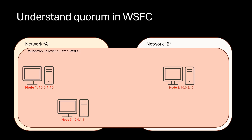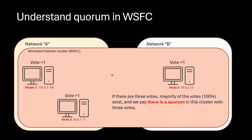Suppose you configured a failover cluster with three nodes. Two nodes are in network A and one node is in network B. In this case each node has one vote, so overall there are three votes in the cluster. Understand vote as membership. If there are three votes, we say the majority of votes exist and there is a quorum in the cluster.